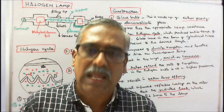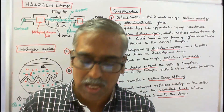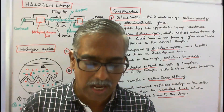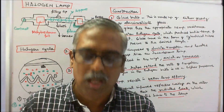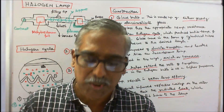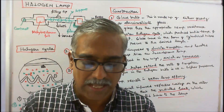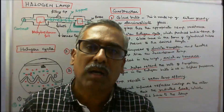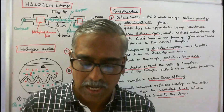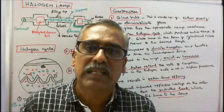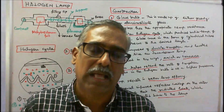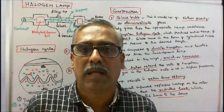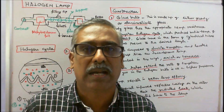Iodine and bromine are the only halogens used in halogen lamps. The halogen lamp is also known as a quartz halogen or tungsten halogen lamp. Now we will see the constructional detail of a halogen lamp.